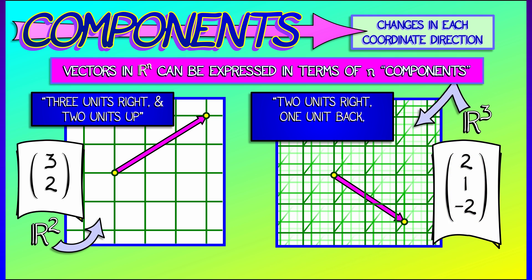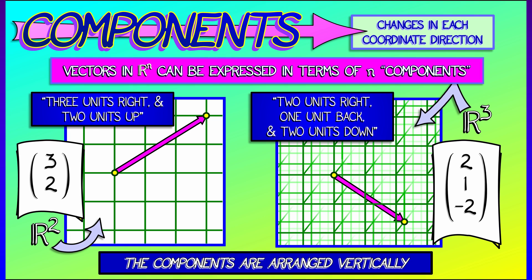In R3, we need three coordinates or components to specify that vector that tell us how far to move along the x-axis, the y-axis, and the z-axis. Now, these components don't need to be integers like we have them here.